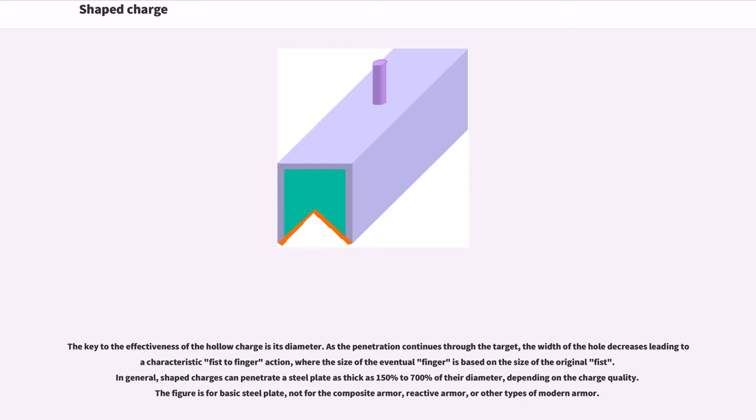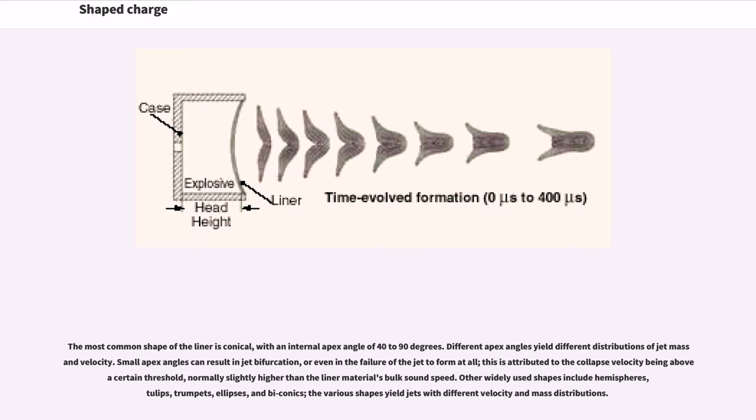The key to the effectiveness of the hollow charge is its diameter. As the penetration continues through the target, the width of the hole decreases leading to a characteristic fist-to-finger action, where the size of the eventual finger is based on the size of the original fist. In general, shaped charges can penetrate a steel plate as thick as 150% to 700% of their diameter, depending on the charge quality. The figure is for basic steel plate, not for composite armor, reactive armor, or other types of modern armor. The most common shape of the liner is conical, with an internal apex angle of 40 to 90 degrees. Different apex angles yield different distributions of jet mass and velocity. Small apex angles can result in jet bifurcation, or even in the failure of the jet to form at all. This is attributed to the collapse velocity being above a certain threshold, normally slightly higher than the liner material's bulk sound speed.